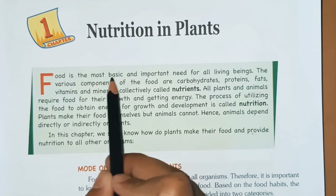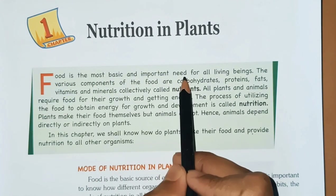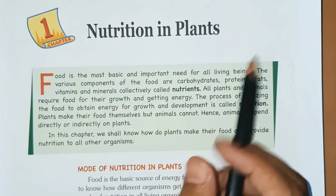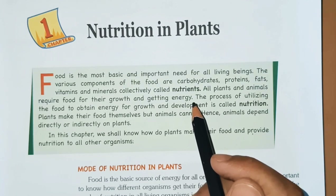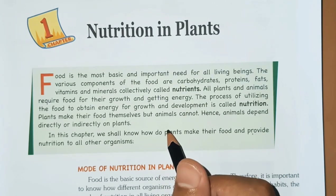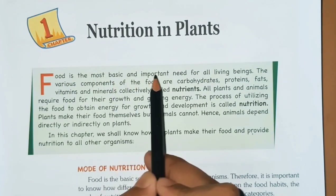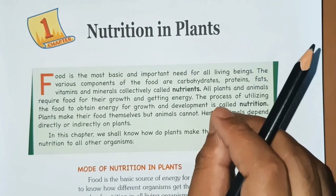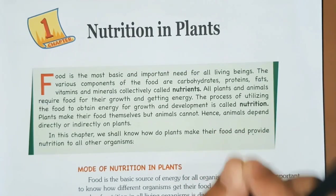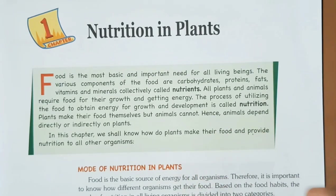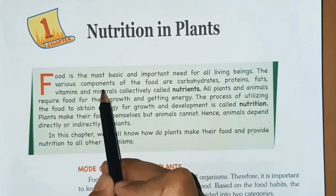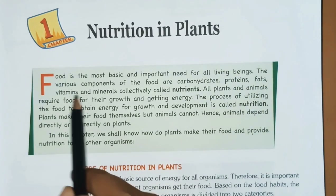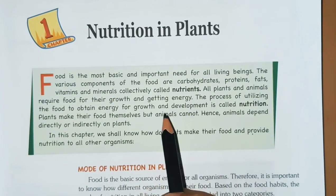Food is the most basic and important need for all living beings. We eat food at regular intervals for our living. Without food, not a single living being or organism can exist on this planet. The various components of food are carbohydrates, proteins, fats, vitamins, and minerals — collectively called nutrients.